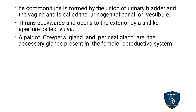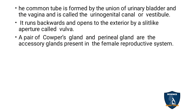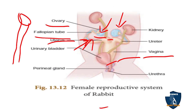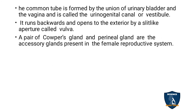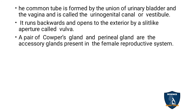A common tube is formed by the union of the urinary bladder and the vagina, called the urinogenital canal or vestibule. This tube runs backwards and opens to the exterior by a slit-like aperture called the vulva. The female reproductive system also has two accessory glands: Cowper's glands and perineal glands, which are helpful in reproduction. The prostate gland is absent in the female.